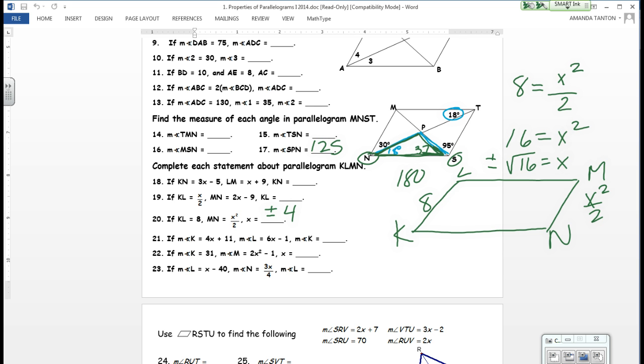That is the same thing. Alright, 22. If angle K is 31 and angle M is 2x squared minus 1, find x. Okay, you only have two choices with angles. They're either equal or they're supplementary. What are these two? Equal.